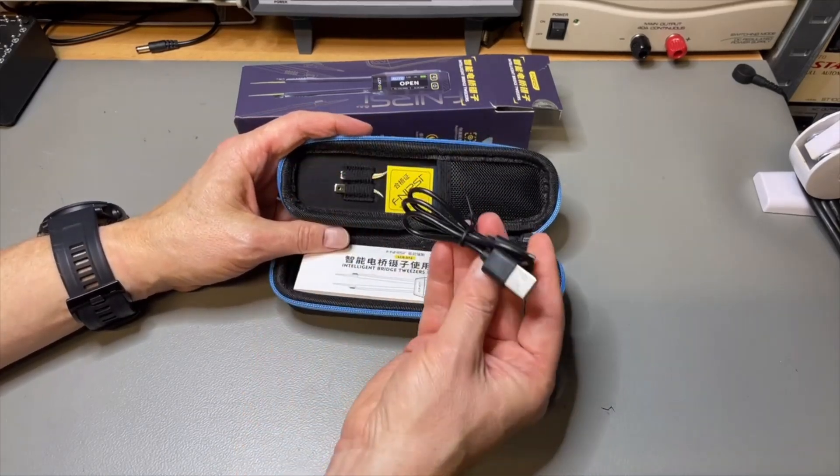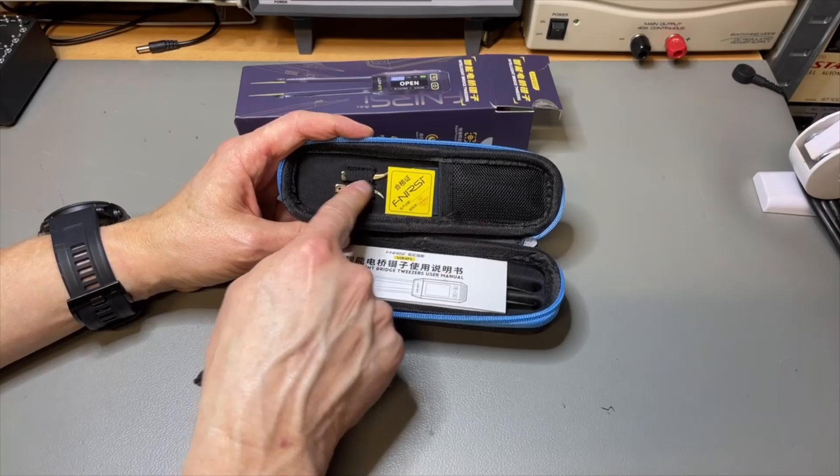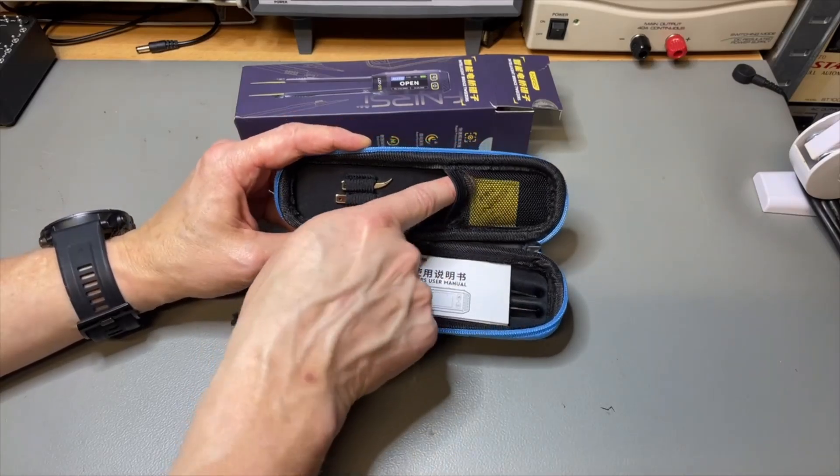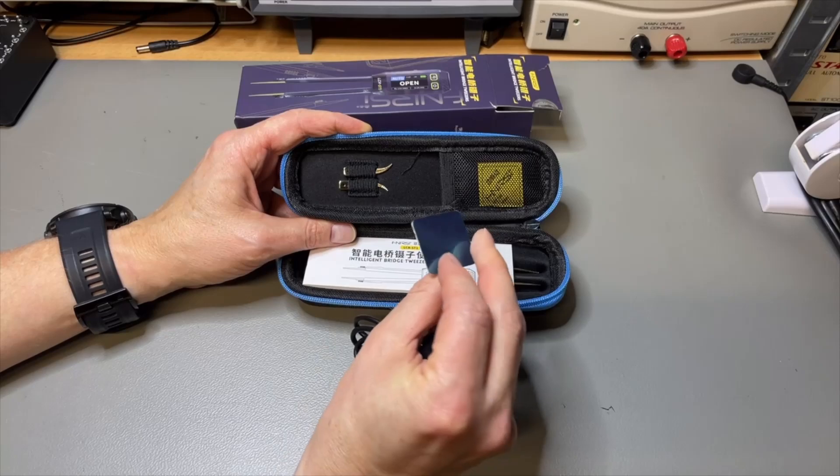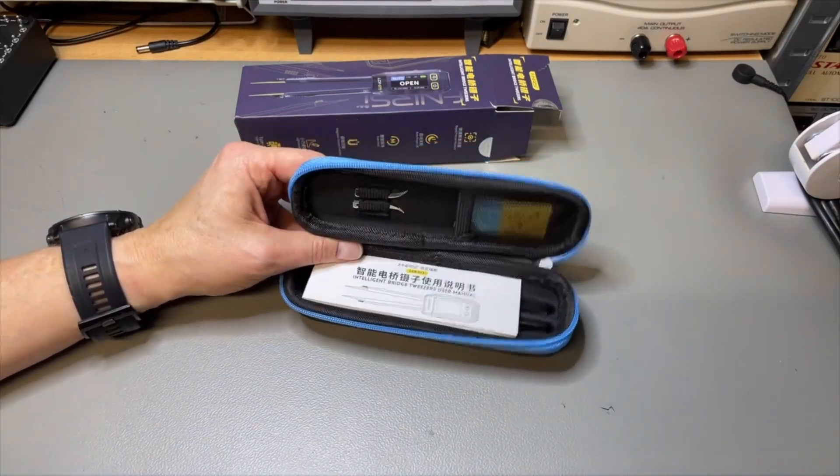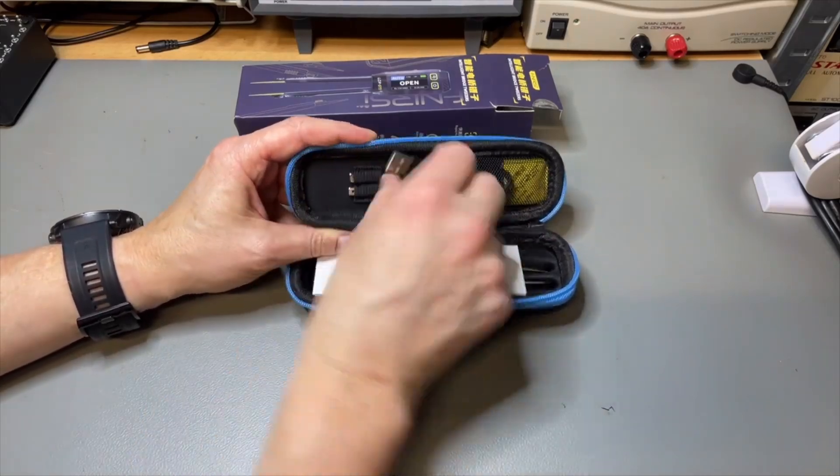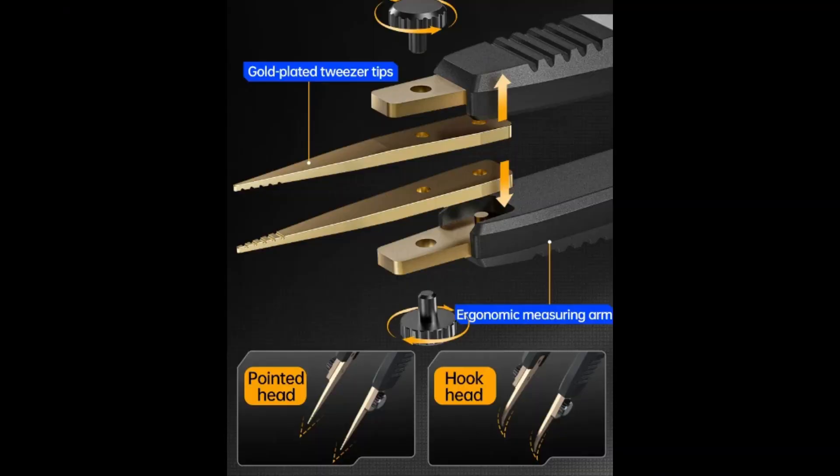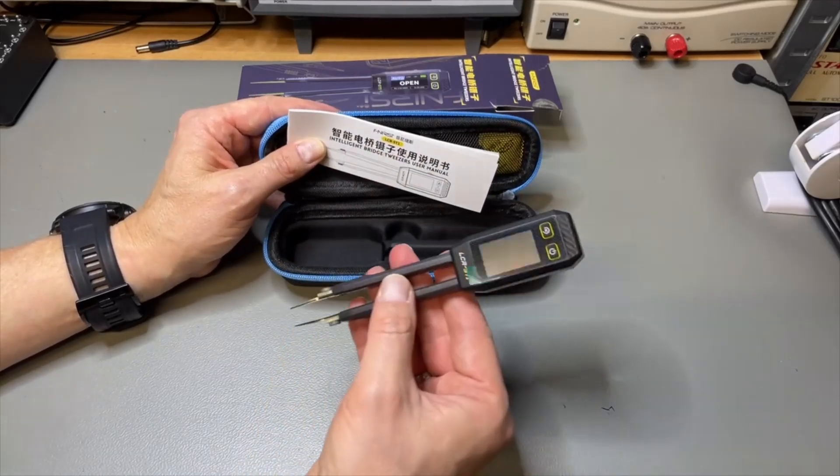We have a USB cable to charge and to do firmware updates. Quality control. There is a little metal plate - I'm not sure what it is for. We have spare tips, that's great. These are a little bit bent tips. And I think here we have straight ones.